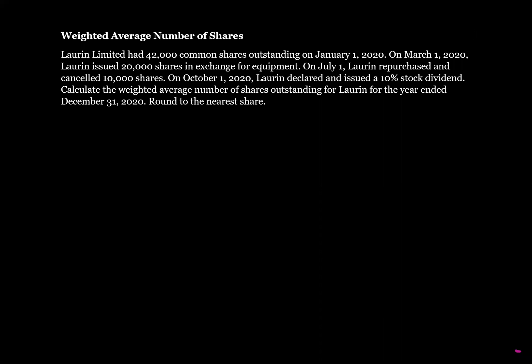This question will walk through how to calculate the weighted average number of shares. Lauren Limited had 42,000 common shares outstanding on January 1st, 2020. On March 1st, 2020, Lauren issued 20,000 shares in exchange for equipment. On July 1st, Lauren repurchased and cancelled 10,000 shares. On October 1st, Lauren declared and issued a 10% stock dividend. Calculate the weighted average number of shares for Lauren for the year ended December 31st, 2020.